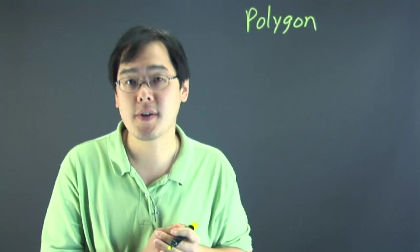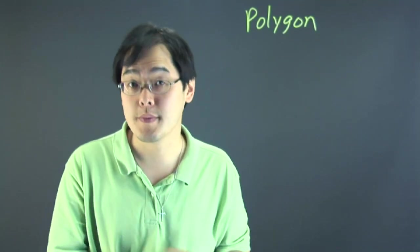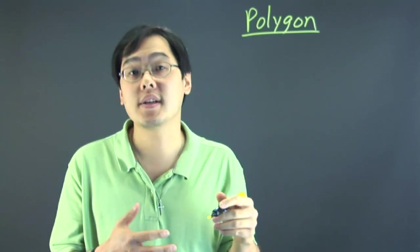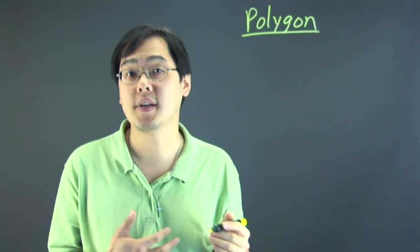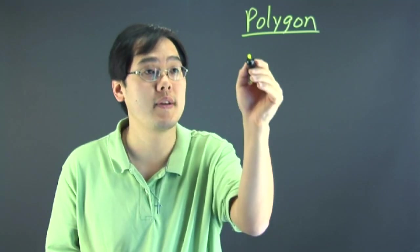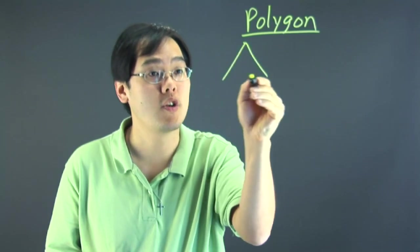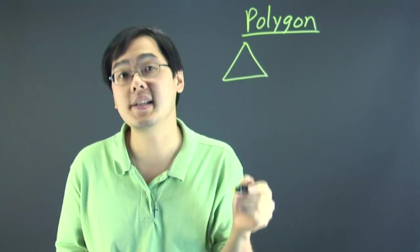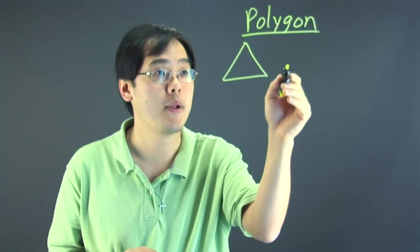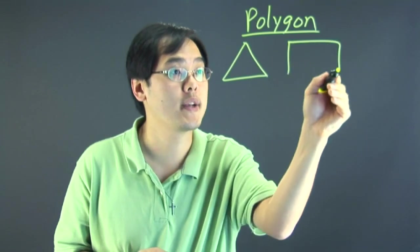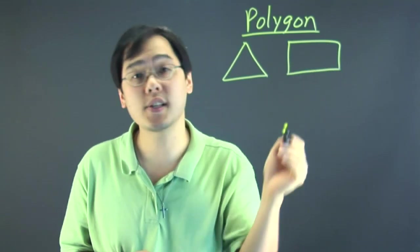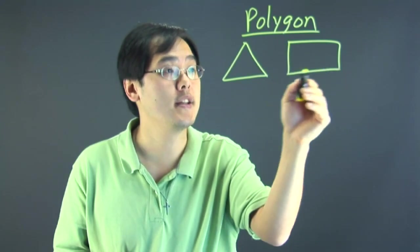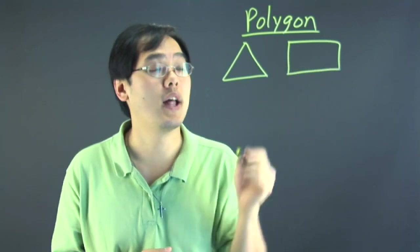A polygon is a closed geometric shape consisting of various line segments. Depending on how many you have to work with — for example, a triangle is a polygon because it's a closed shape with three line segments connected together. If you have a square or a rectangle, that's a closed shape because it's closed and it's made up of four line segments.